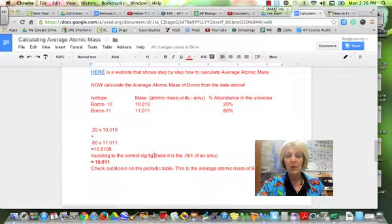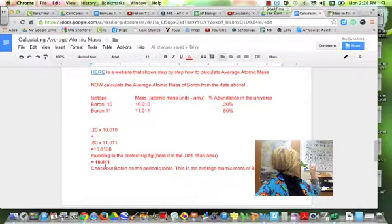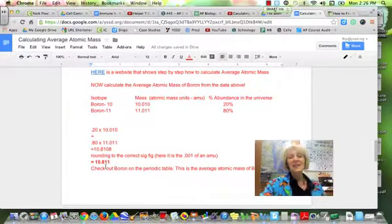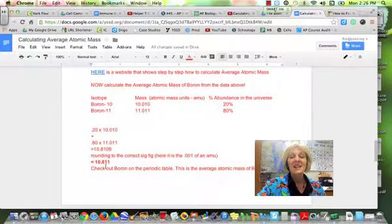If I round that to correct sig figs, in this case it's going to be 0.001 of an AMU, because that's the lowest sig figs that I have here. And I would get 10.811. If I look on my periodic table at boron, I see that the red number is 10.811. That is the average atomic mass of boron.